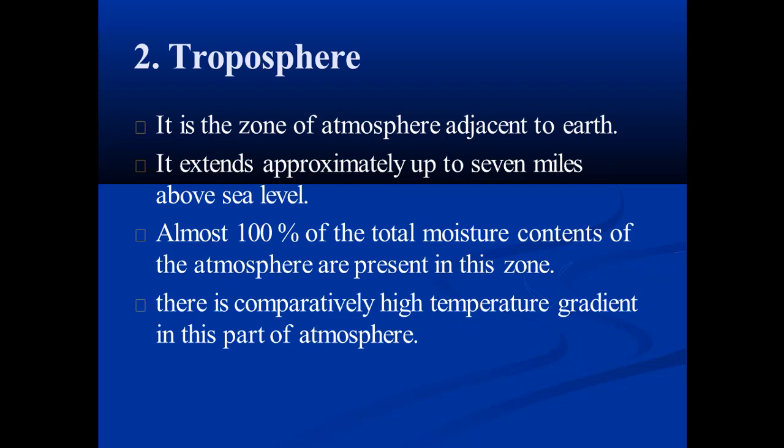Next is the troposphere. It is the zone of atmosphere adjacent to the earth, extending approximately 7 miles above sea level. The total moisture content — 100% of the atmosphere's moisture content — is present in this zone. There is also a comparatively high temperature gradient in this part of the atmosphere.